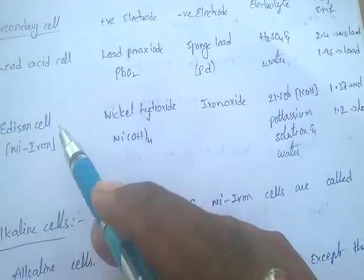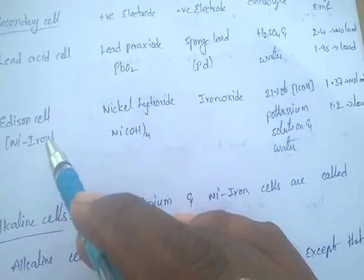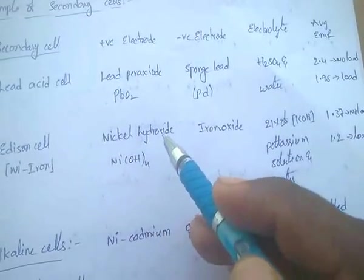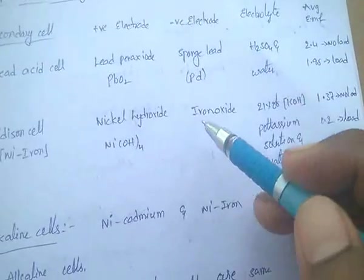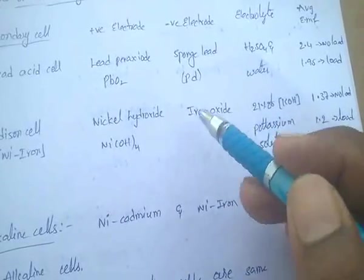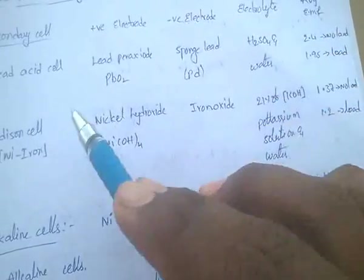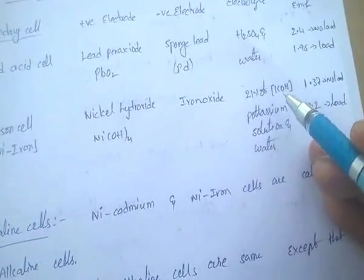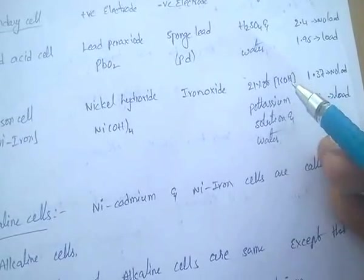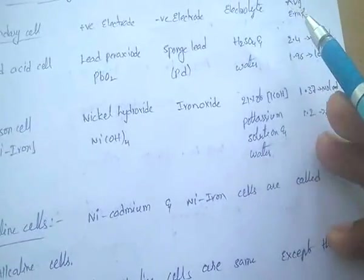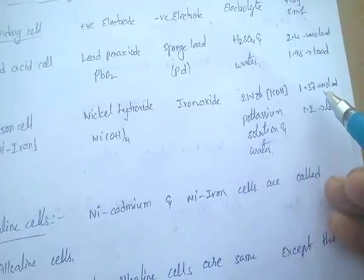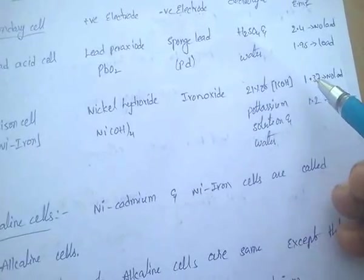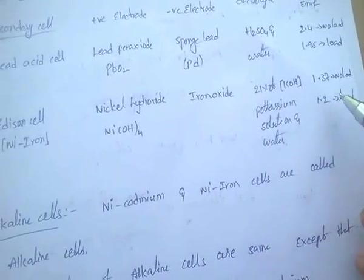The Edison cell is a nickel iron cell: the positive electrode is nickel hydroxide, the negative electrode is iron oxide, and the electrolyte is 21% potassium solution and water. The average EMF is 1.37V at no load and 1.2V at load — less than the lead acid cell.